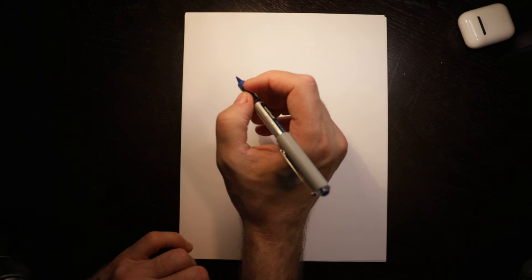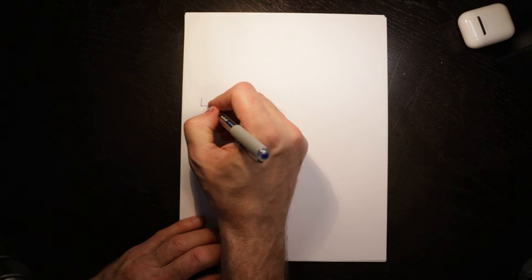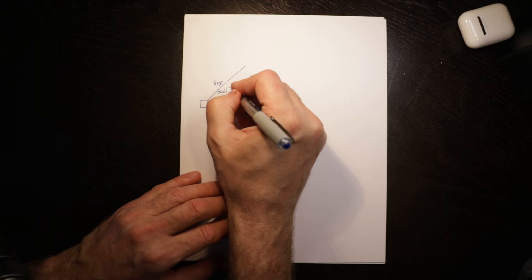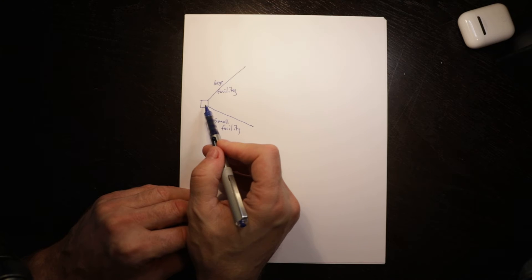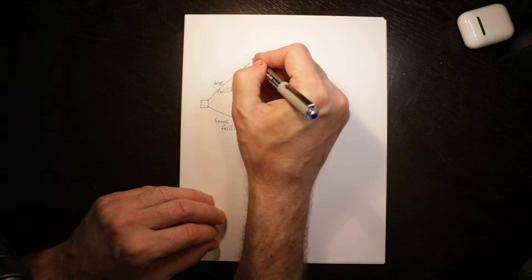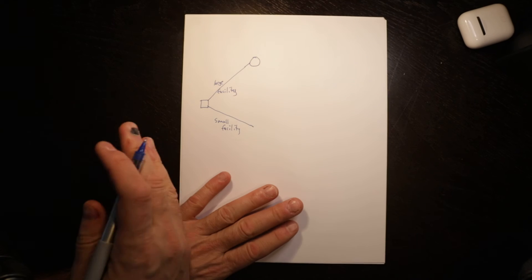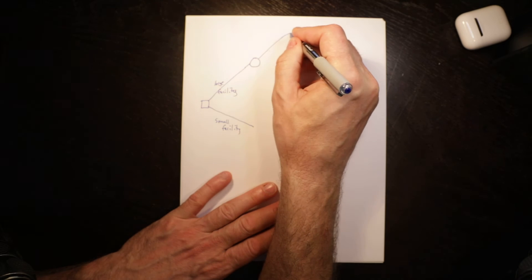We draw what is called a decision tree. Here we start with a decision, and we draw a decision as a square. A square means we have a choice. In this case we can build a large facility or we can build a small facility. Then we have an uncertain state of nature, and in that case we draw a circle. It's important to know the distinction between when you have a decision and when you have something you have no control over. We always draw the decision tree from left to right and analyze it from right to left.